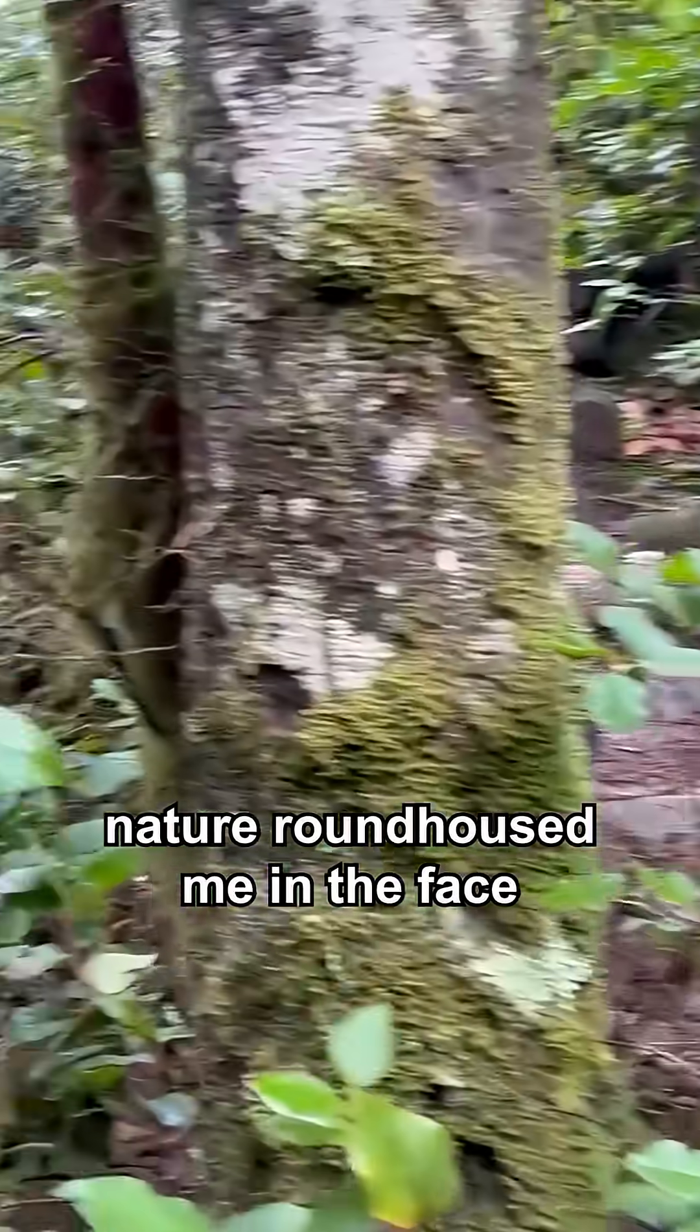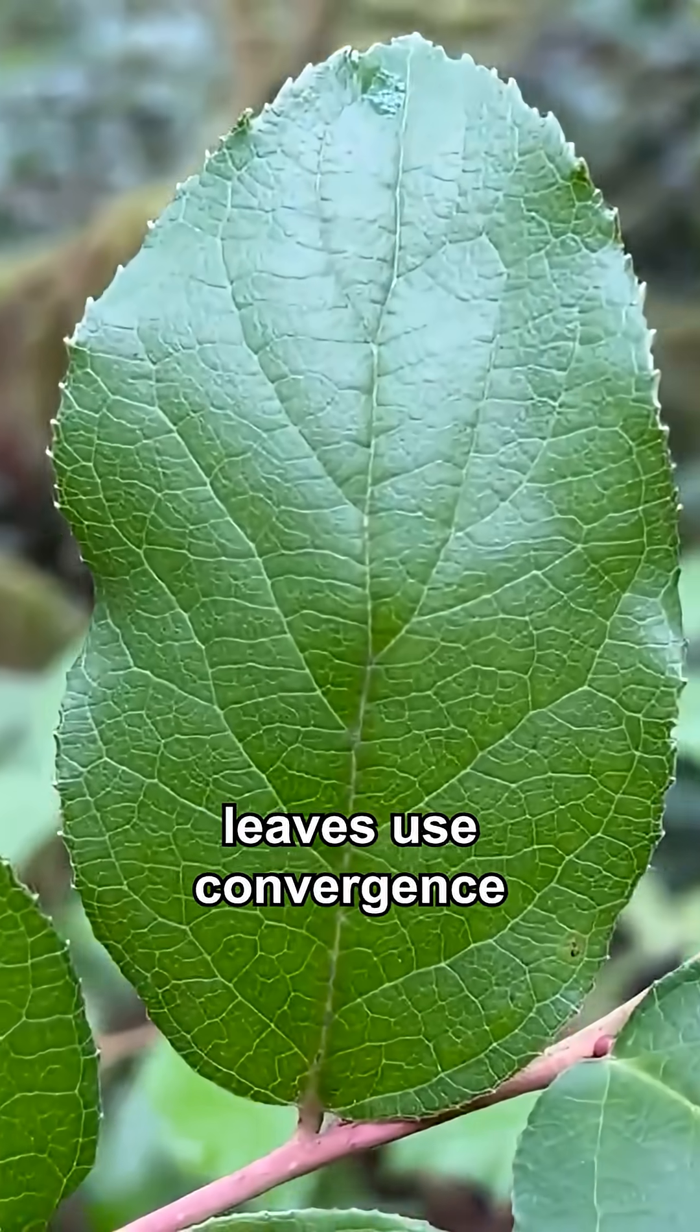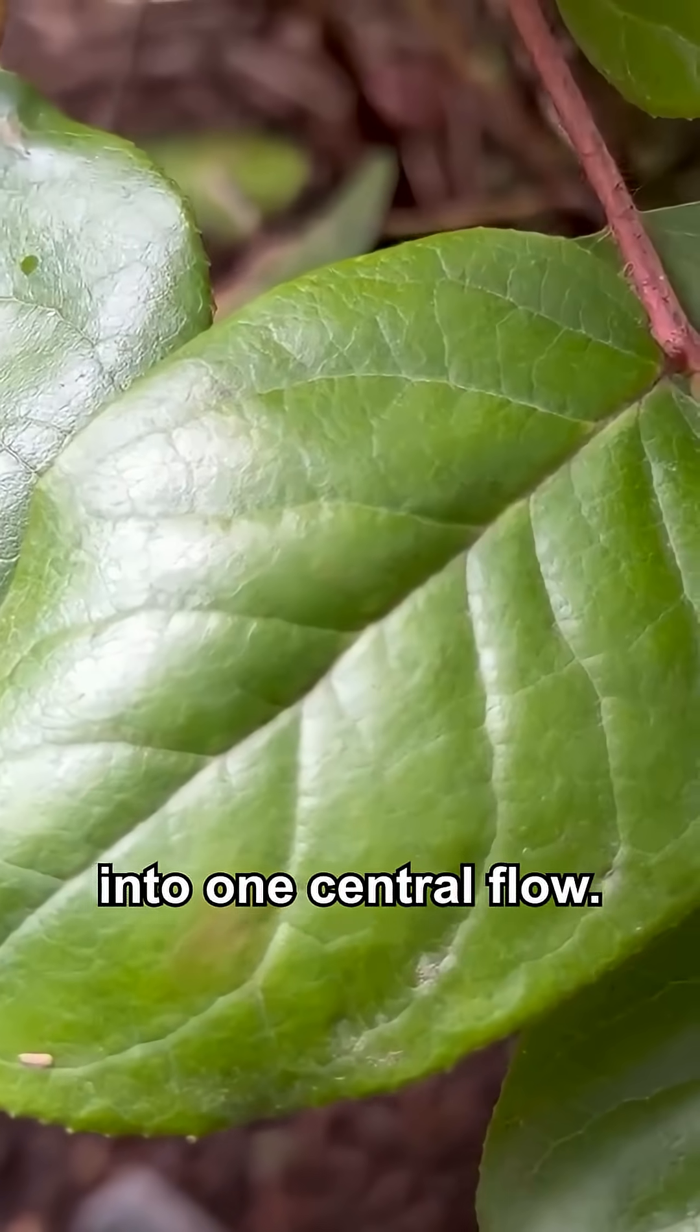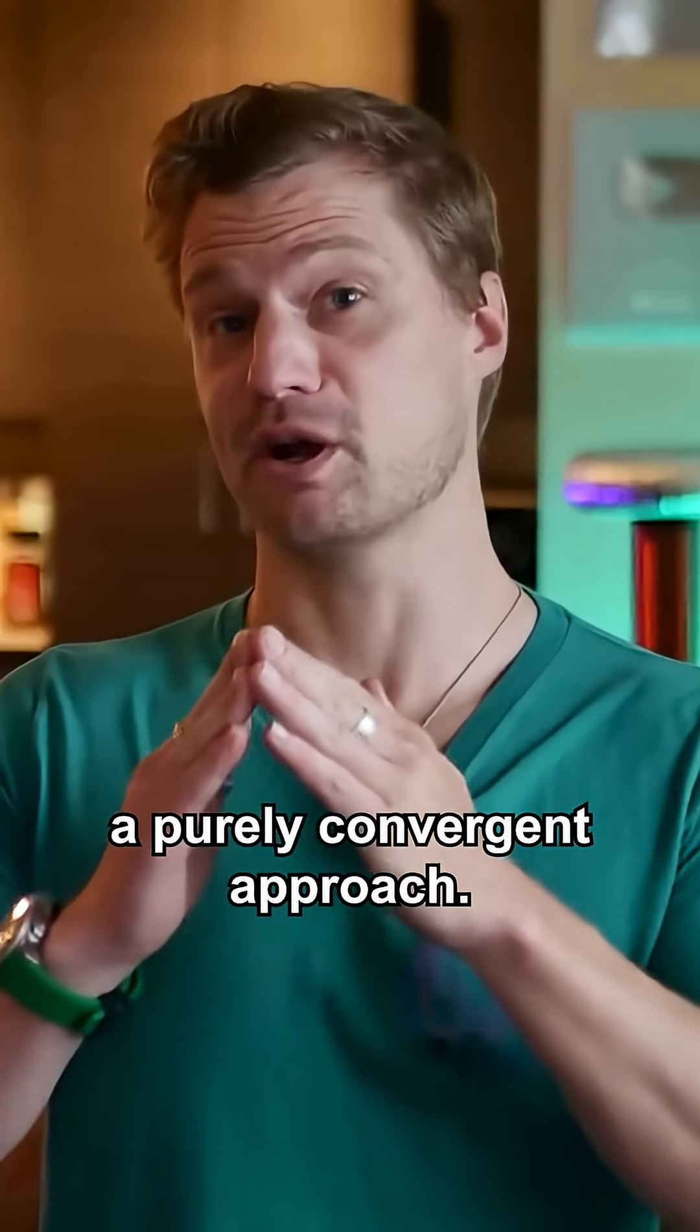During a hike one day, nature roundhoused me in the face with a solid reminder. Leaves use convergence with their veins and are optimized to accumulate sugar into one central flow. Perhaps ionic thrust could benefit from a purely convergent approach.